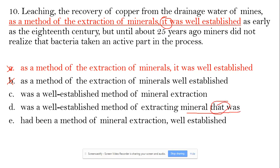In D, 'as early as 18th century' should modify 'method,' but 'was as early as 18th century' is an incorrect modifier, so D is out. For E: 'had been a method of mineral extraction well established' — here 'extraction was well established,' but actually 'method was well established,' so 'well established' is an incorrect modifier. E is out. C is the best choice.